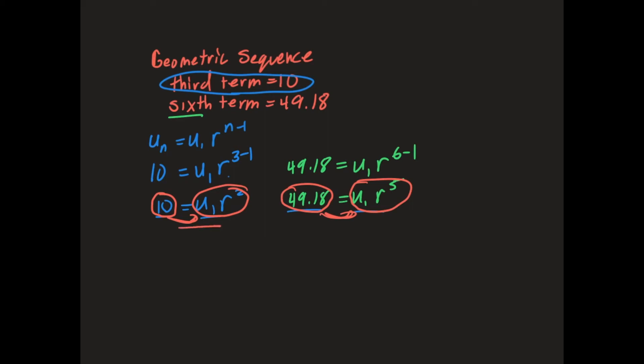Now, I did say this one divided by that one, but because the power is bigger over here, the fifth power, I'm actually going to do it the other way. I'm going to divide this side, the 49.18, by 10. And then the other side, u1 R to the fifth, I'm going to divide by u1 R squared.